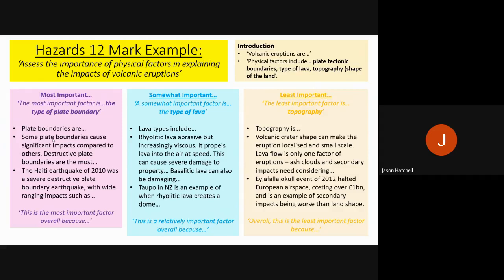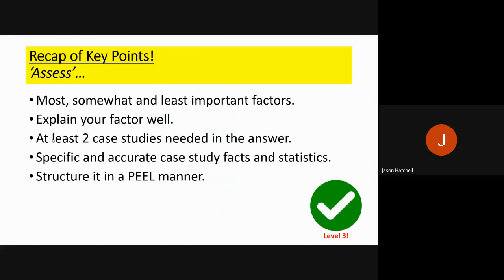These examples show how you demonstrate to an examiner that you can decide most, somewhat, and least important, and give evidence based on your explanations. To recap: categorise into most, somewhat, and least important; explain each factor as well as you can; use at least two case studies throughout your answer; give specific and accurate case study facts and statistics — don't make them up and don't generalise; and finally, PEEL paragraph your answers throughout. That will lead you to a good level three answer.